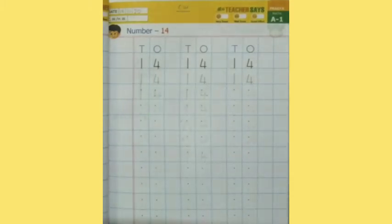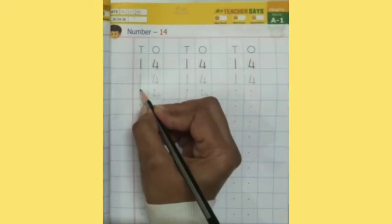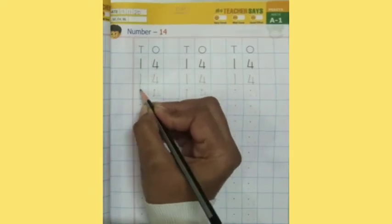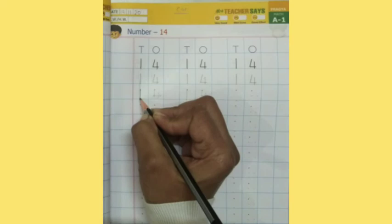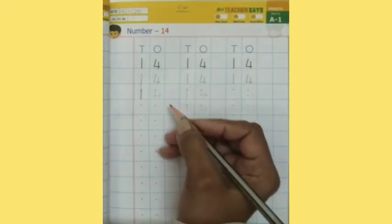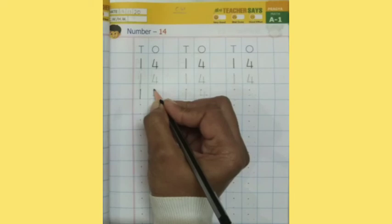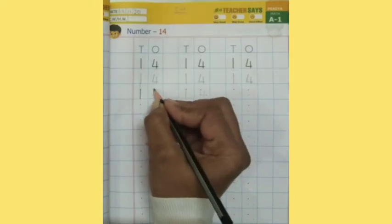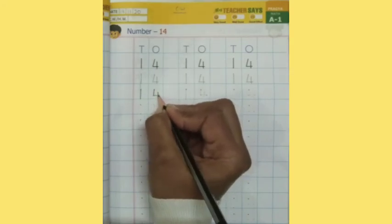Now I will tell you how to write number 14. From this dot, you will write number 1. This dot is starting line. We will write number 4. Standing line, slipping line, cut the line.